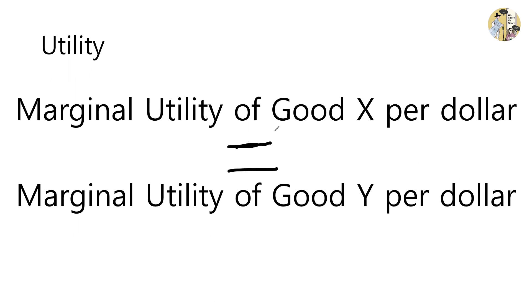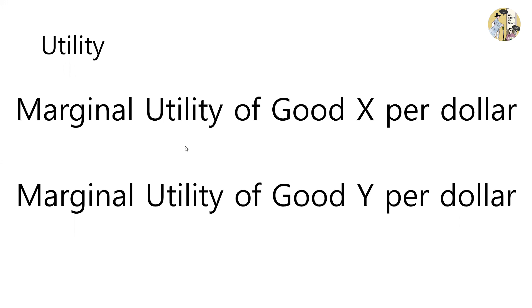If there are two goods, good X and good Y, you should consume until the point in which the marginal utility of good X per dollar is equal to the marginal utility of good Y per dollar. This is a very important concept. In certain AP questions which ask you how much should we consume in two goods, you should use this analysis to say: we should consume until the point where the marginal utility of good X per dollar equals the marginal utility of good Y per dollar, using our limited money.